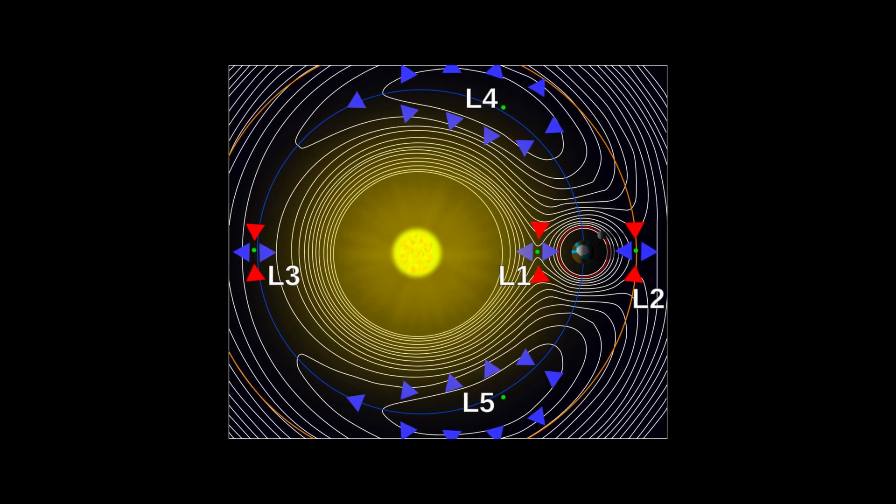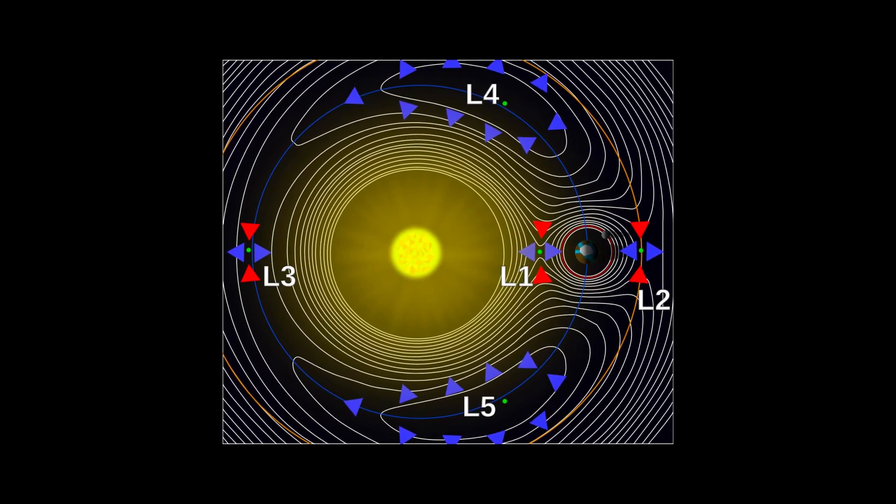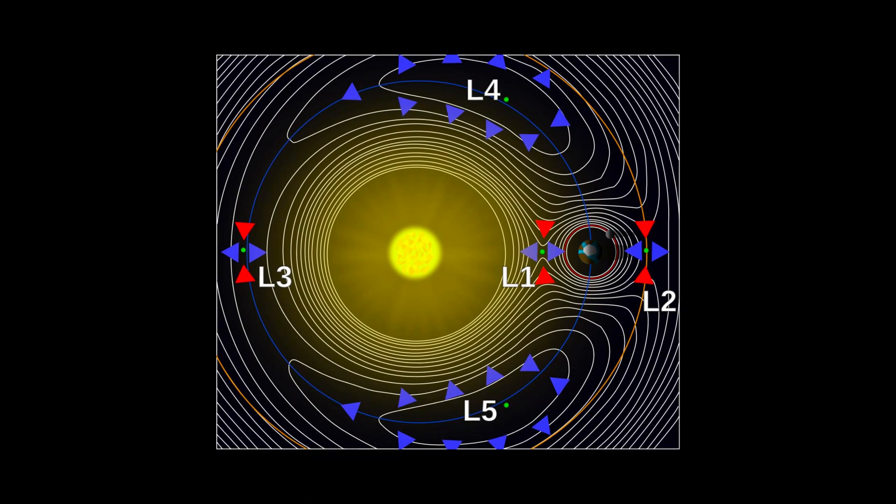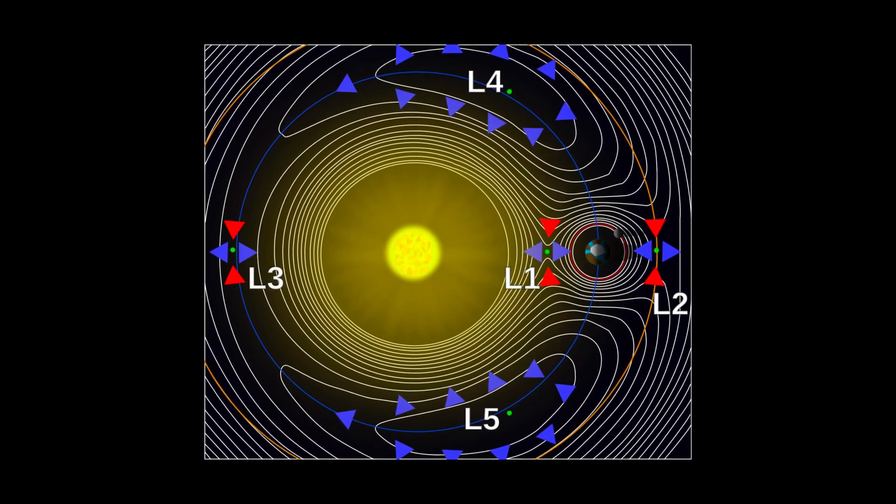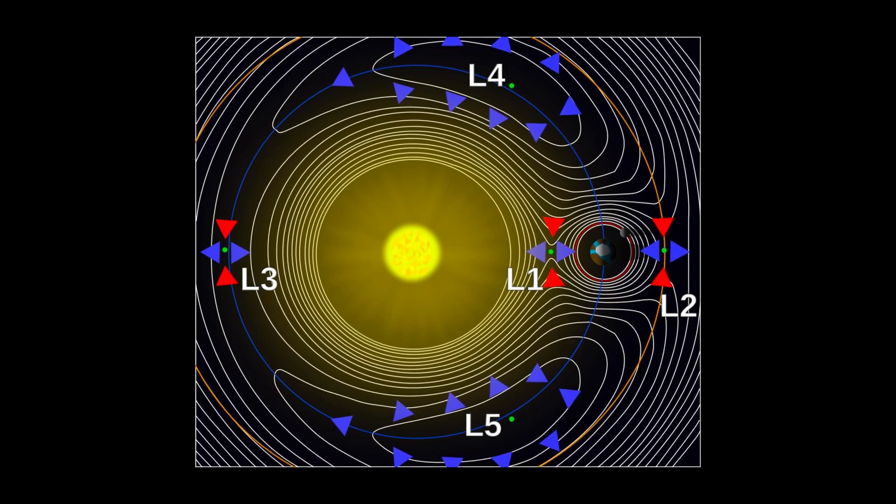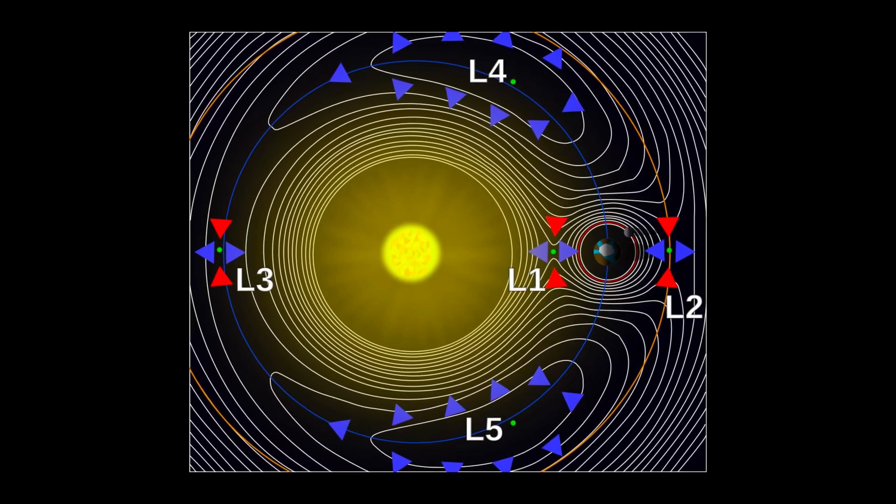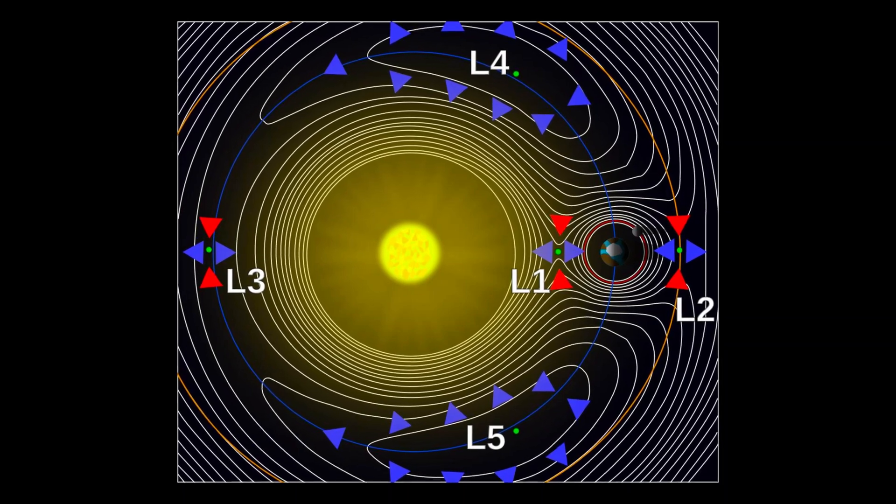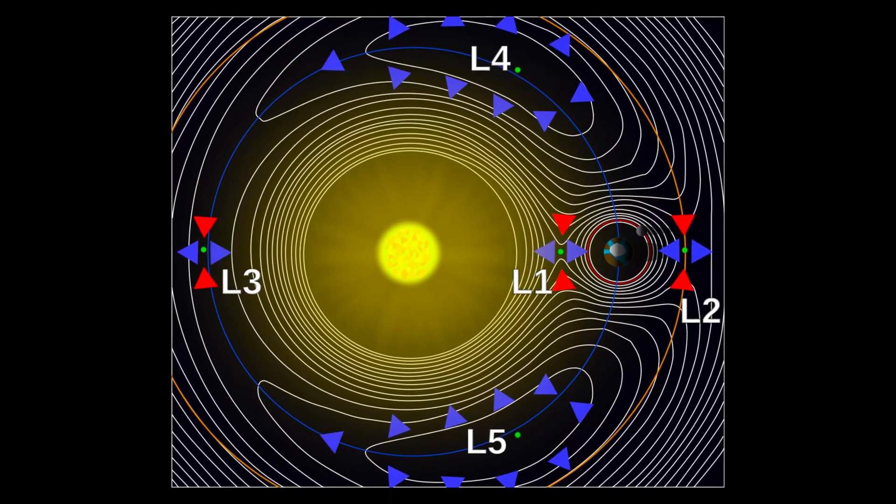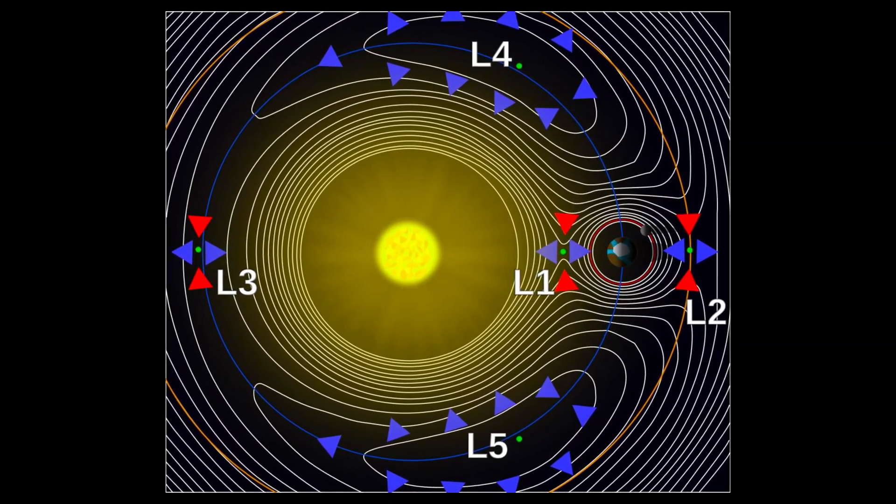L1, L2, and L3 are points of unstable equilibrium, meaning if you launch a spacecraft there, its position must constantly be corrected to prevent it from flying away, as in the example with the ball on the hilltop. But points L4 and L5 are points of stable equilibrium, so even if an asteroid without an engine flies there, it will stop there, like a ball at the bottom of a pit, lying in it quite stably.